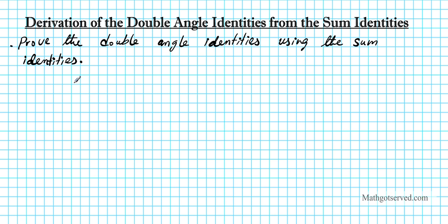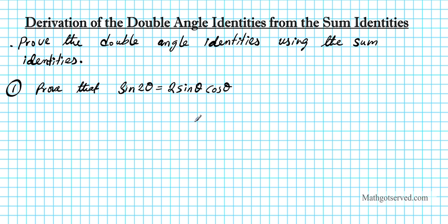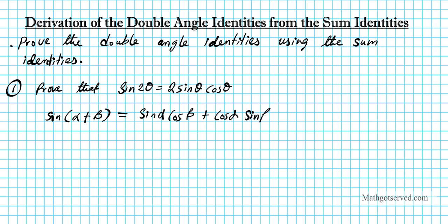So part one, we're going to be proving the double angle identity for sine. We're going to prove that sine two theta equals two sine theta cosine theta. First of all, let's start off by stating what the sum identity for sine is. For sine, we know that sine of alpha plus beta equals sine alpha cosine beta plus cosine alpha sine beta.